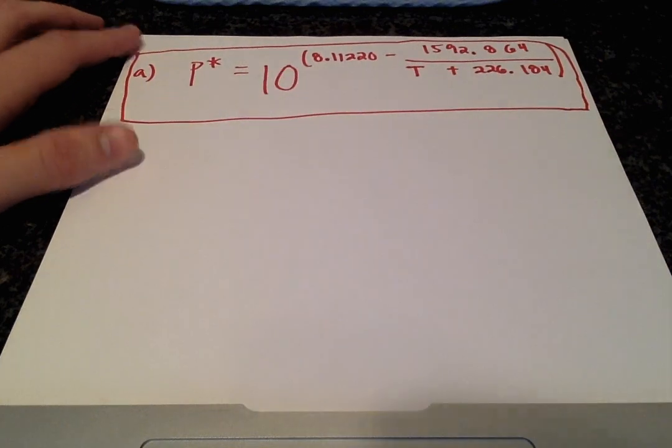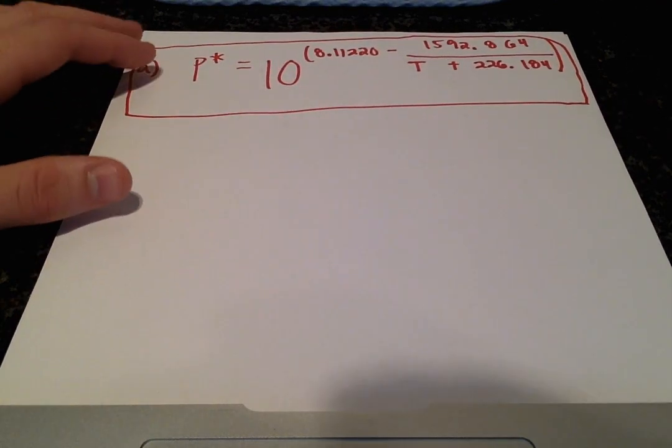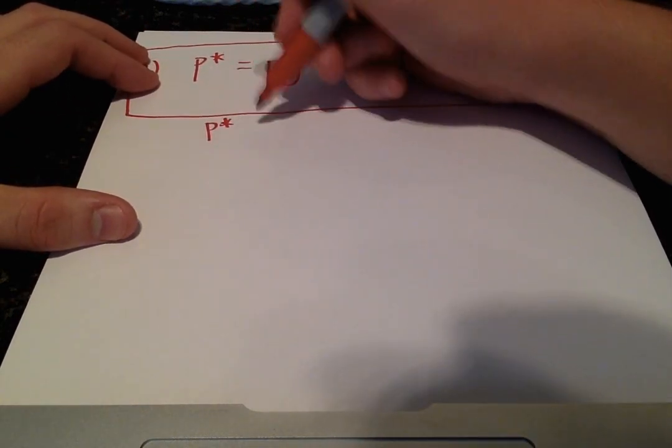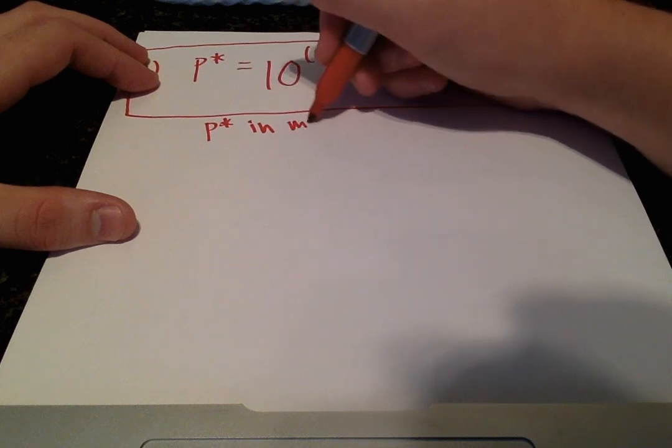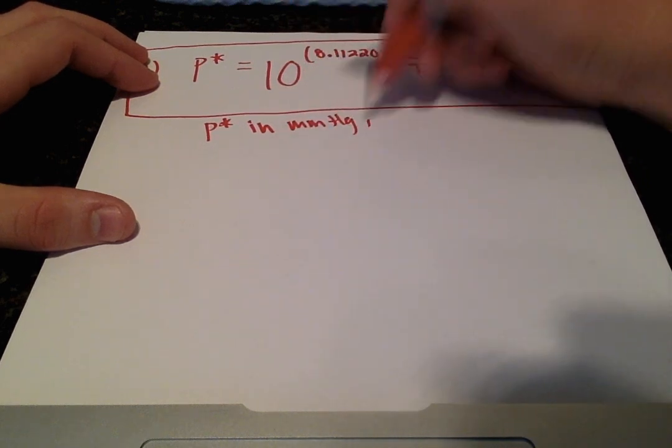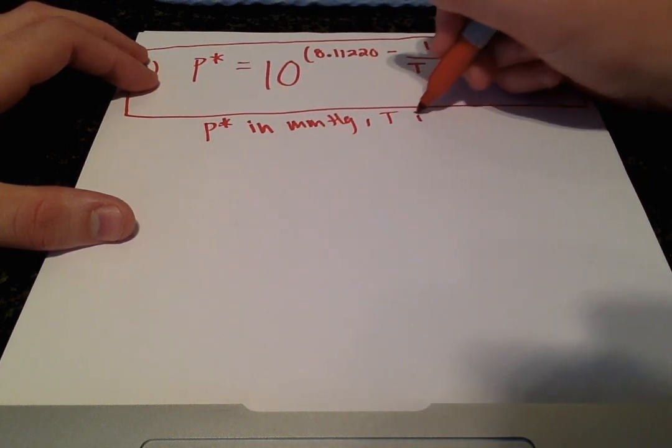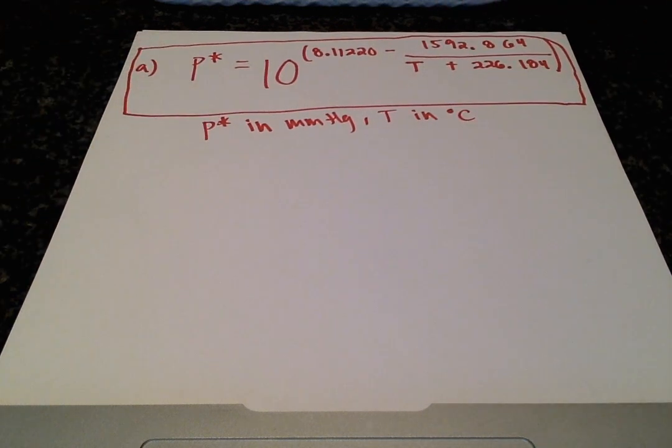and one important note is to record the unit. So for vapor pressure, that's going to be in millimeters of mercury, and temperature is going to be in degrees Celsius.